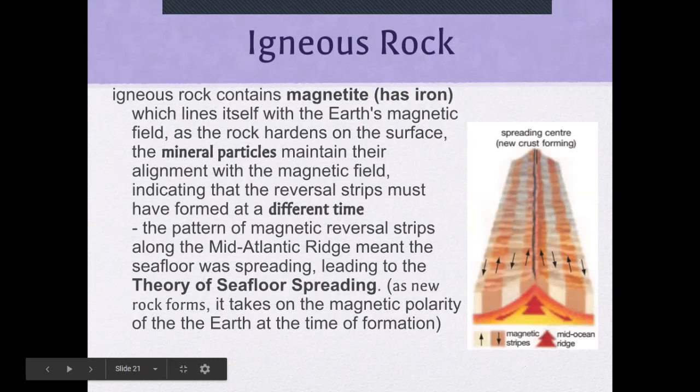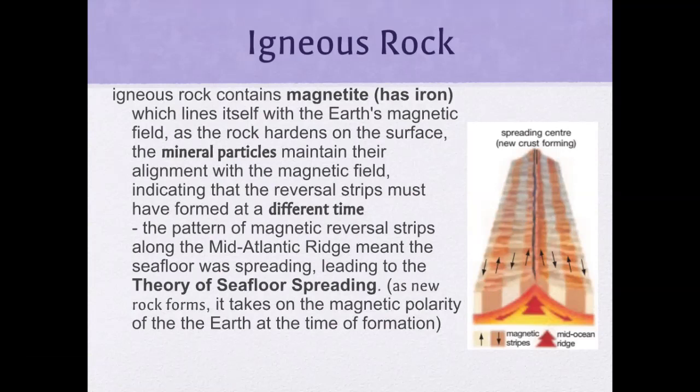Igneous rocks can contain magnetite, which has iron and is magnetic, and it lines itself with the Earth's magnetic field. As the rock hardened on the surface, the mineral particles maintained their alignment with the magnetic field, indicating that the reversal strips must have formed at different times. The pattern of magnetic reversal strips along the mid-Atlantic Ridge confirmed the theory of sea floor spreading. As new rocks form, they take on the magnetic polarity of the Earth at the time of formation.